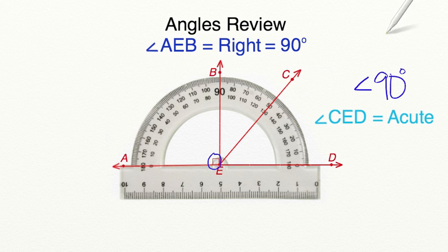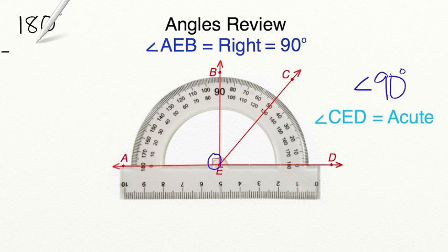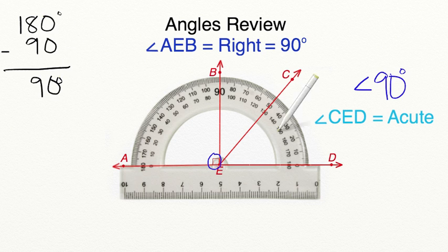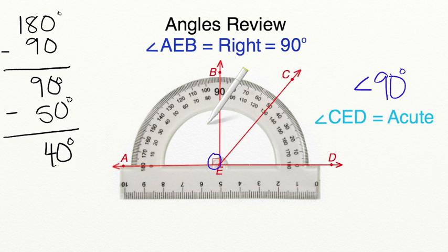That leaves us with one missing angle, angle B-E-C. Let's do a little bit of math here. We know that the sum of all three angles has a value of 180 degrees. If we already know that angle A-E-B has a value of 90 degrees and we know that angle C-E-D has a value of 50 degrees, we can find our missing angle. So we know that angle B-E-C has to have a value of 40 degrees because these angles are all on a straight line.